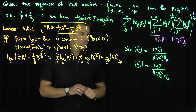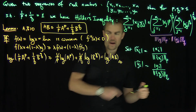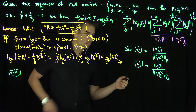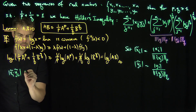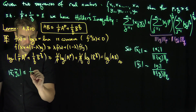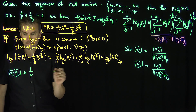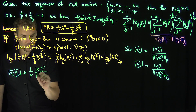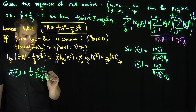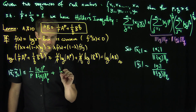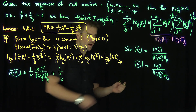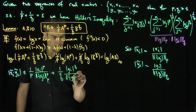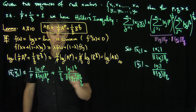Now, by Young's inequality applied to x̃ᵢ and ỹᵢ, we have x̃ᵢỹᵢ is less than or equal to (1/p)|xᵢ|^p divided by the lp norm of xⱼ raised to the p, plus (1/q)|yᵢ|^q divided by the lq norm of yⱼ raised to the q.